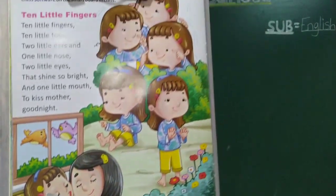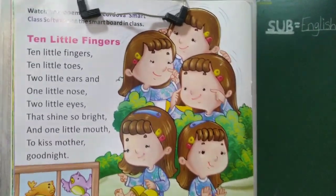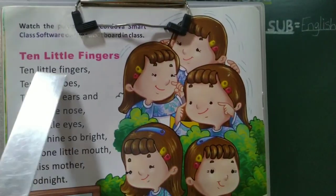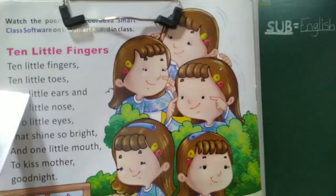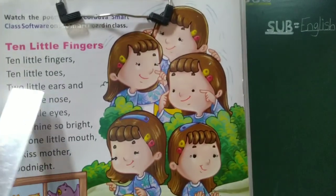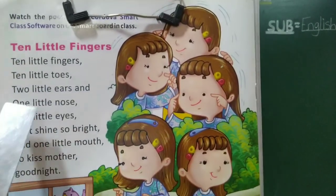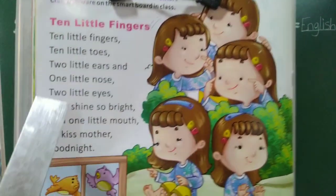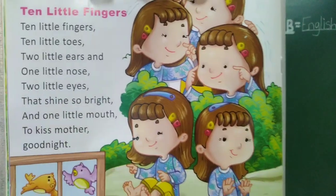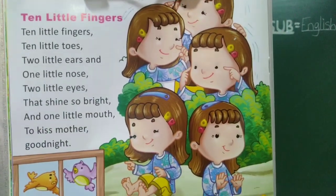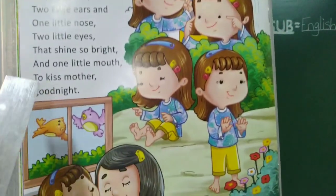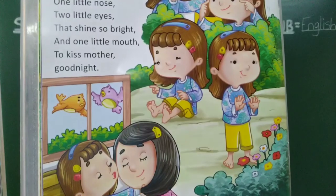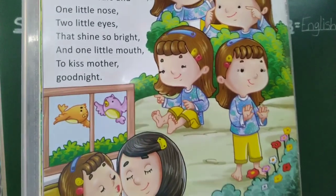Okay, once again we read this rhyme. Ten little fingers. Ten little toes. Two little ears and one little nose. Two little eyes that shine so bright. And one little mouth to kiss — Mother goodnight.